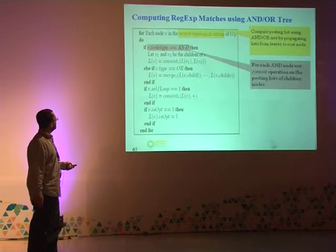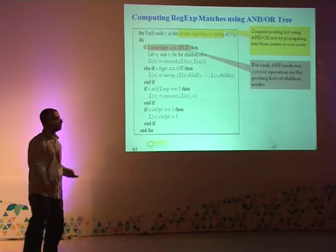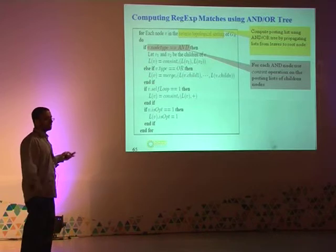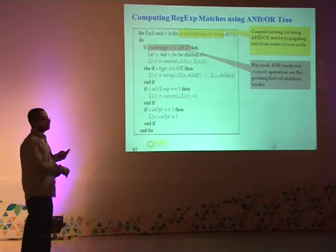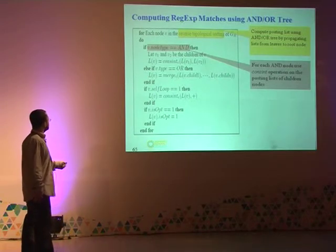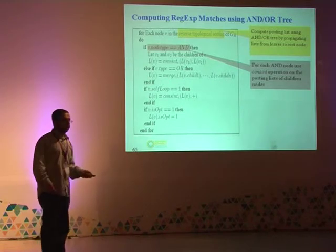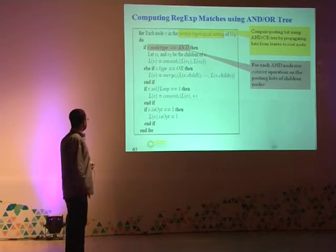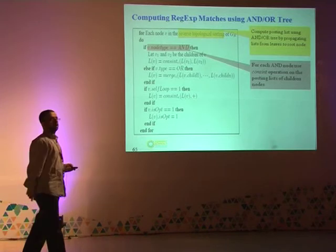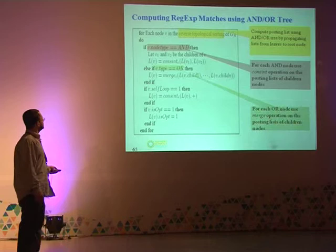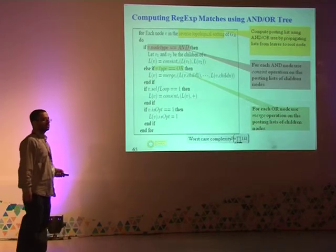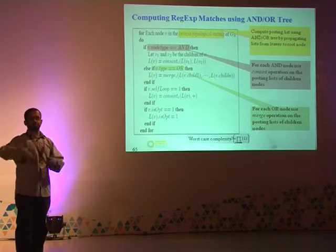The basic idea is: start with reverse topological sorting of the AND-OR graph, starting with nodes at the bottom. For each node, determine its type. If it is an AND node (circular), invoke consecutive intersection. If it is OR, invoke merge. If it has a self-loop, use a slight variant of consecutive intersection. Then associate a flag with the output posting list. The worst-case complexity of this process is a product of the posting list sizes processed through this regular expression tree.